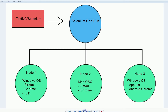The nodes can be different computers — you can have one that's a Windows OS with Firefox, Chrome, and IE11, and then you can have another node that's Mac OS X with Safari and Chrome, or even another Windows machine running Appium and Android Chrome. You can have as many nodes as you want connected to your one grid, and all you have to do is say 'run my tests as Windows Firefox' and Selenium Grid will find a Firefox on Windows available and start running those tests.